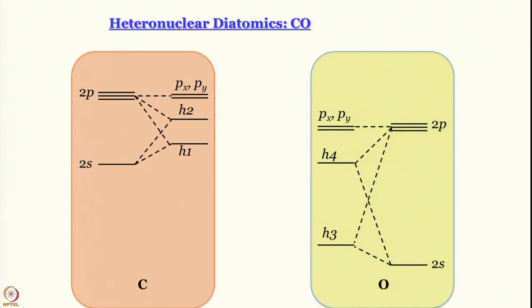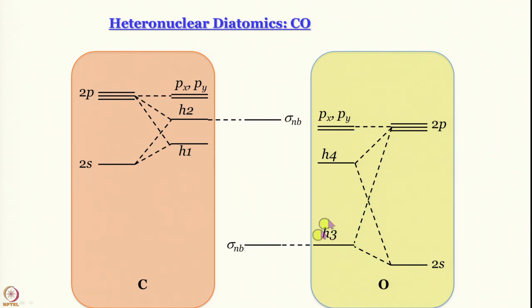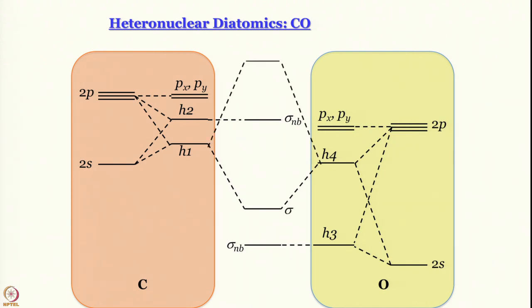Now let us see which orbitals have comparable energy and appropriate geometry. H3 has very low energy compared to H1 and H2, so it is going to remain non-bonding. H2 has a slightly higher energy compared to H4, so it will remain non-bonding on carbon. H1 and H4 have energies close enough, so they form a linear combination to give the bonding sigma orbital and the antibonding sigma* orbital. The px and py orbitals on carbon and oxygen can form two pairs of degenerate pi bonds, generating two sets of degenerate pi orbitals and pi* orbitals.